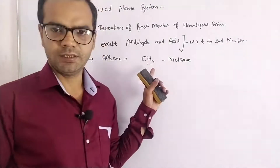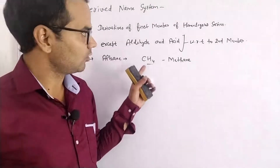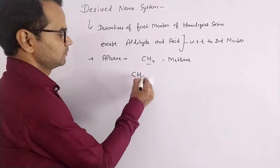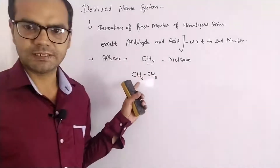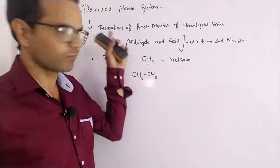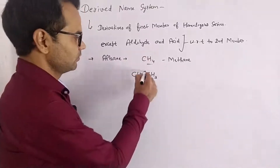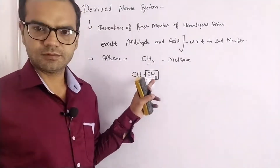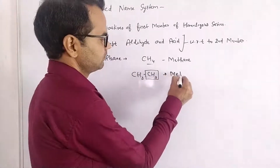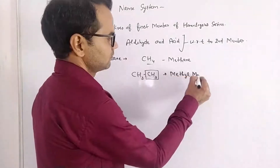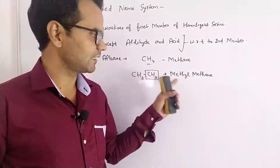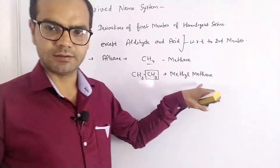For alkanes, the first member is methane, so the next homologues will be named with respect to methane. The next member is CH3-CH3, whose IUPAC name is ethane, but its derived name is given with respect to methane. So the derived name is methyl methane.